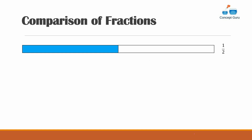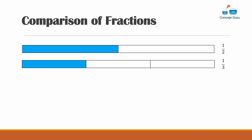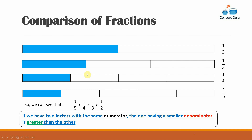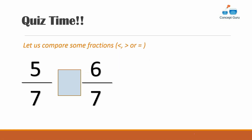Now take four strips and divide them into two, three, four, and five parts respectively, coloring one portion in each. This gives one half, one third, one fourth, and one fifth. As we can see, one fifth is less than one fourth, one fourth is less than one third, and one third is less than one half. So if two fractions have the same numerator, the one with the smaller denominator is greater.